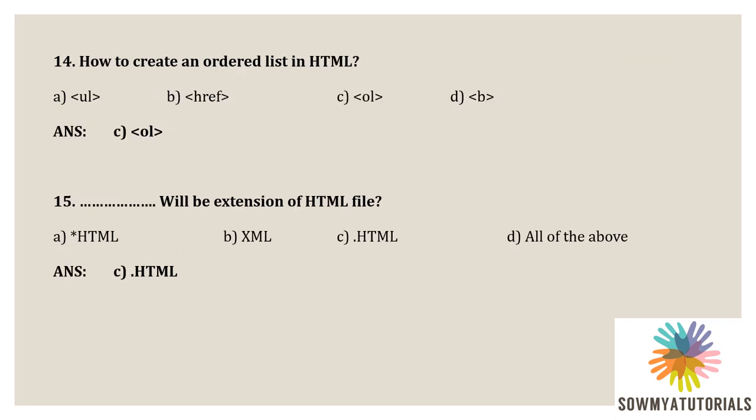How to create an ordered list in HTML? Option A: UL — that is unordered list. Option B: H reference — that is for hyperlink. Option C: OL — for ordered list. Option D: B — that is bold text. The correct option is Option C, OL, which means ordered list.